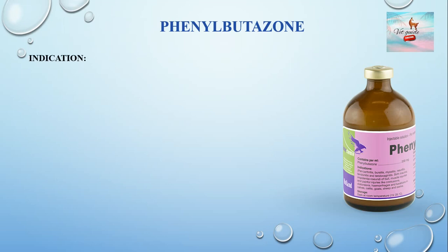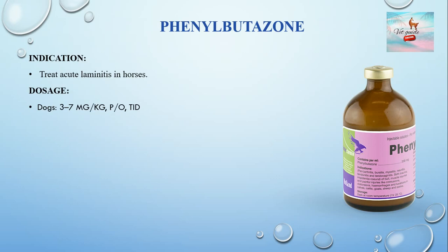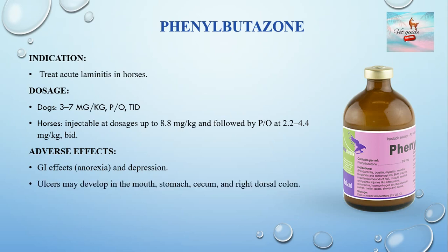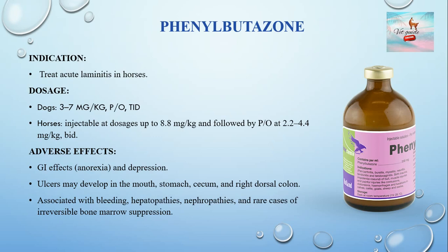Phenylbutazone is used to treat conditions such as acute laminitis in horses. Its dose rate in dogs is 3–7 mg/kg orally three times a day. In horses, up to 8.8 mg/kg injectable, followed by oral dosing at 2.2–4.4 mg/kg twice daily. Adverse effects include gastrointestinal signs such as anorexia and depression. Ulcers may develop in the mouth, stomach, cecum, and right dorsal colon, along with bleeding, hepatopathies, nephropathies, and rare cases of irreversible bone marrow suppression.